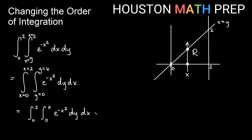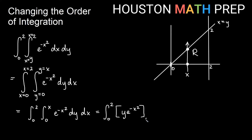Let's look at why the order of integration matters here. What is e to the negative x squared if we're integrating dy? Well, it's just a constant. So I get this thing times y when I integrate dy first. I'll leave my 0 to 2, and here I will just get y times e to the negative x squared, evaluated from 0 to x, and then we will integrate dx later.